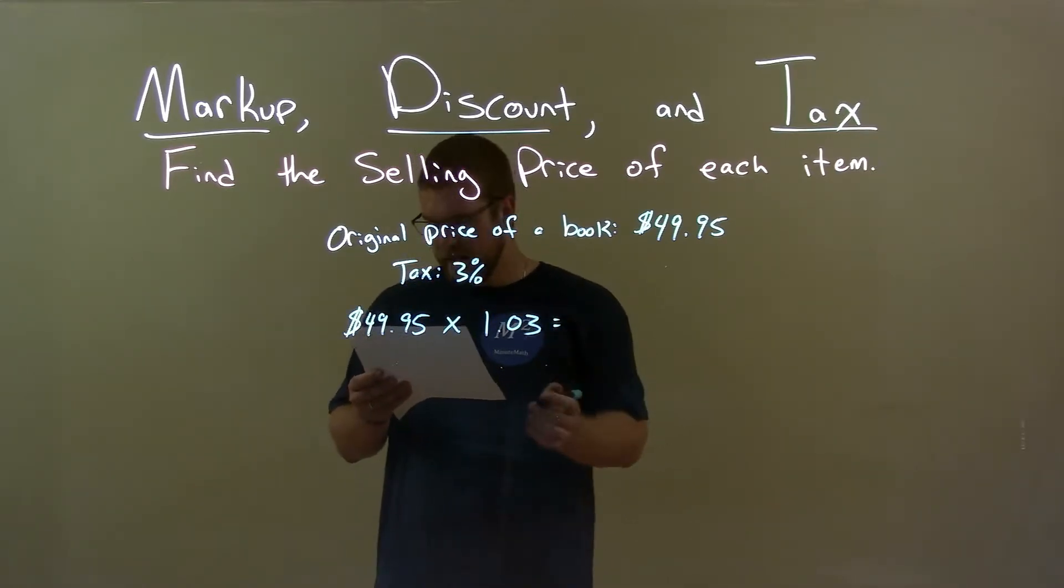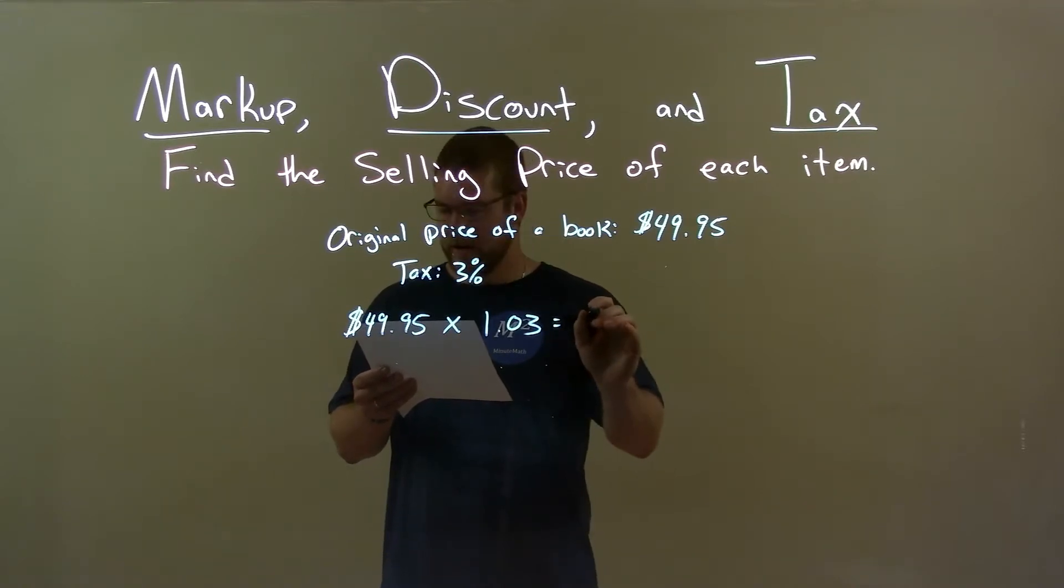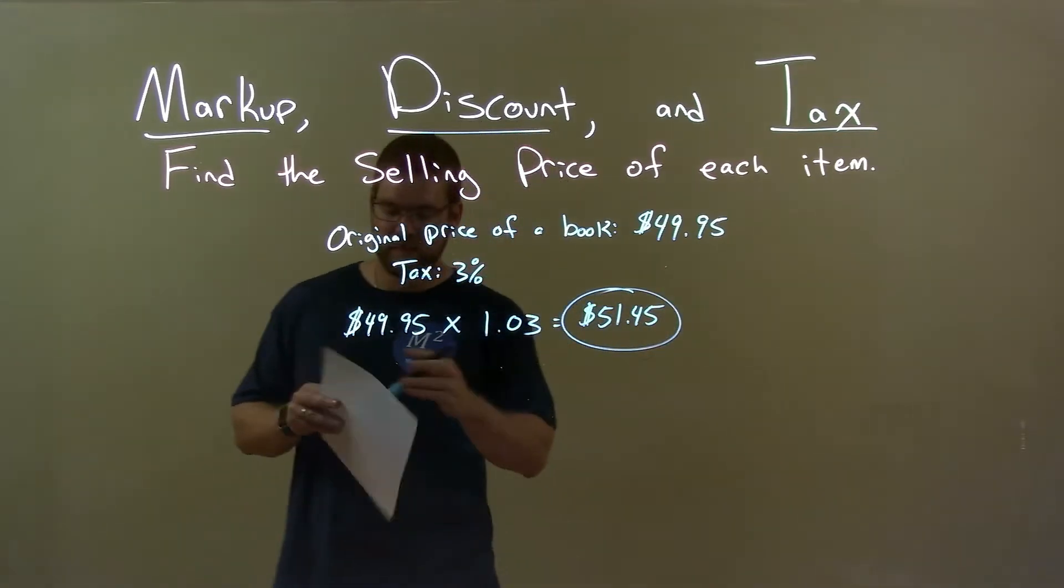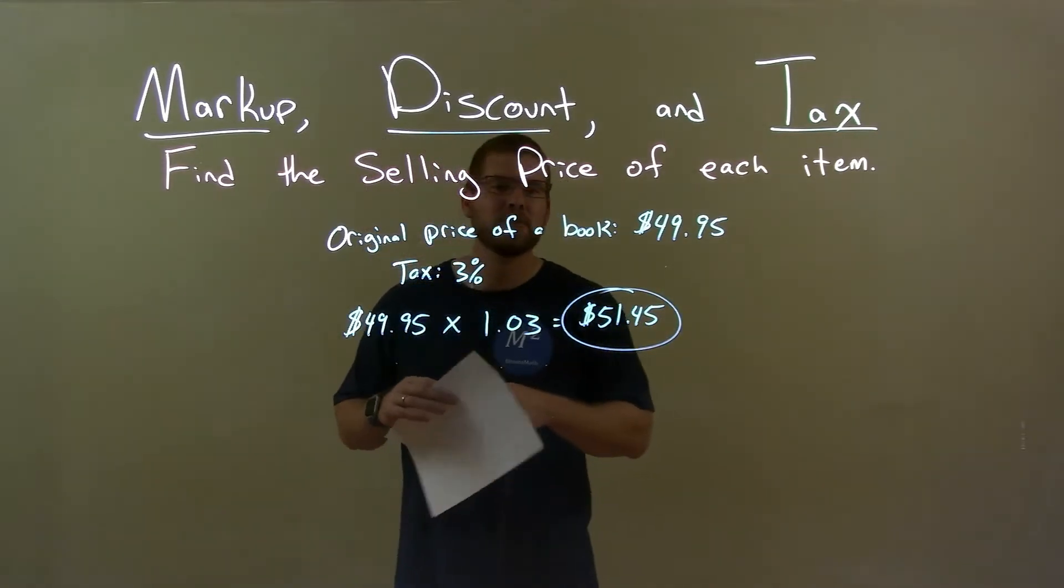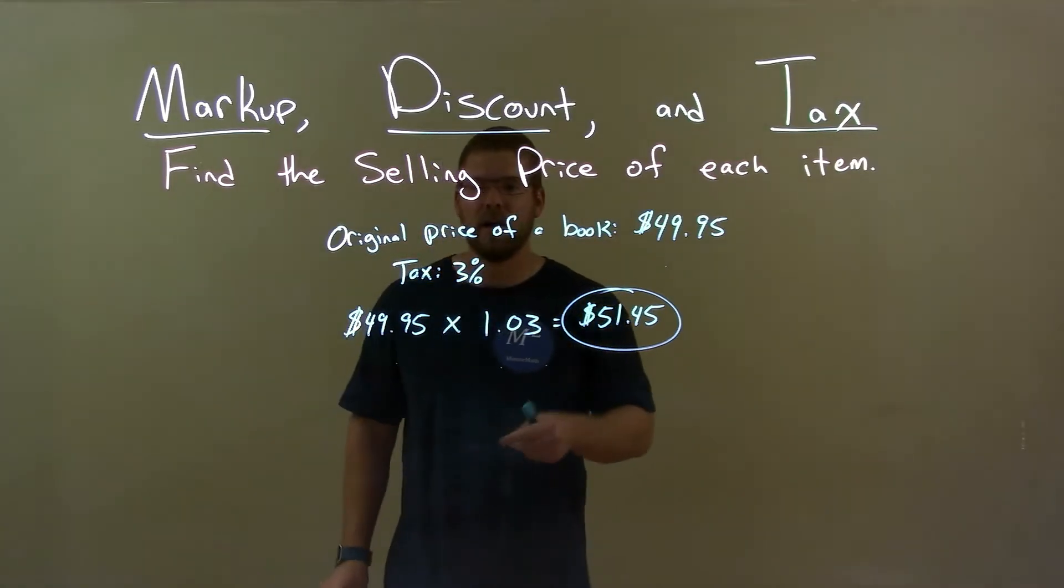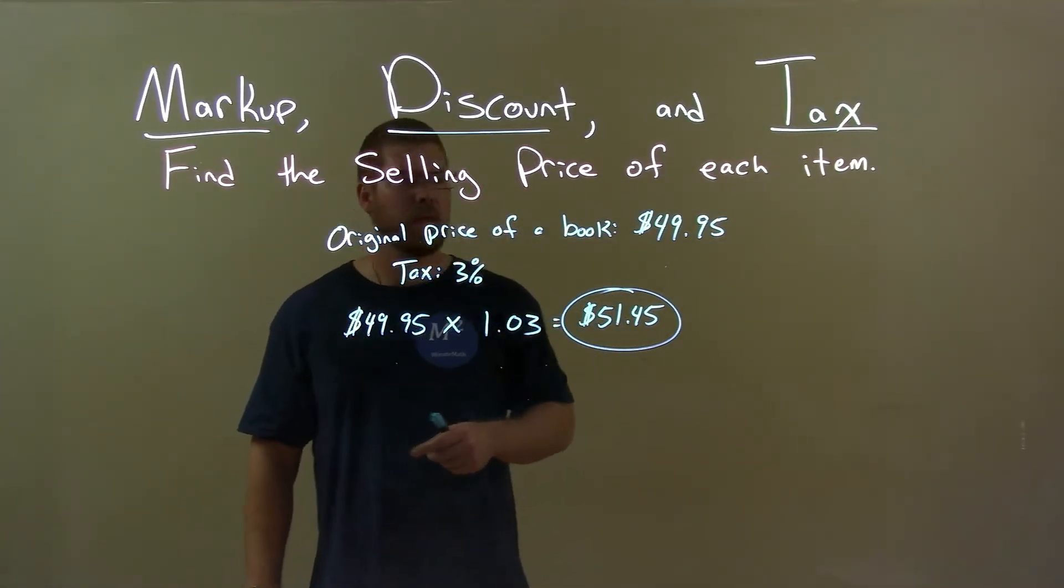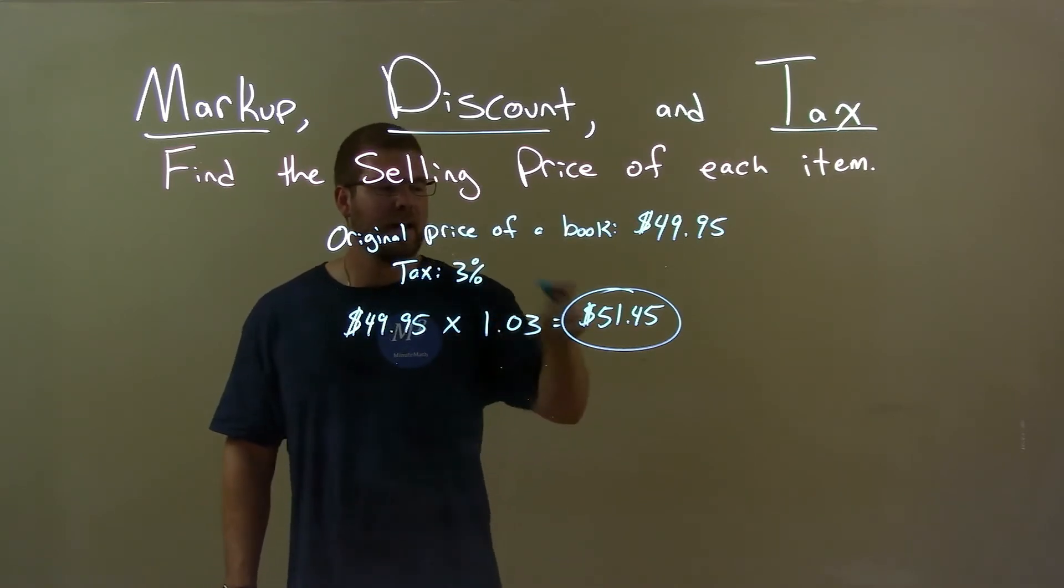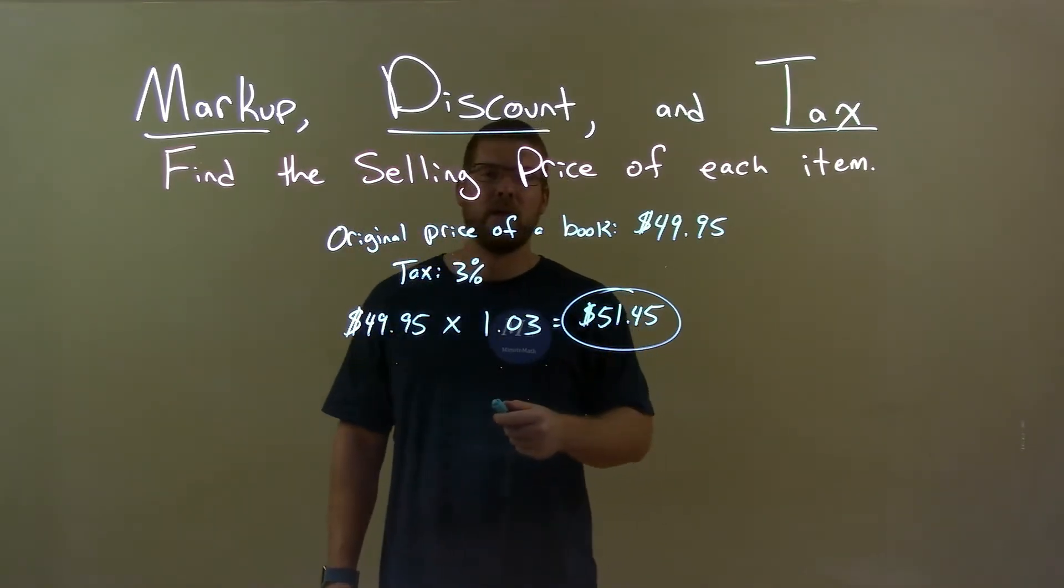And that gives me a final price after taxes of $51.45. So quick recap, we're given the original price of the book at $49.95 and its tax is 3%. We take that $49.95 multiplied by 1.03 and get our final answer of $51.45.